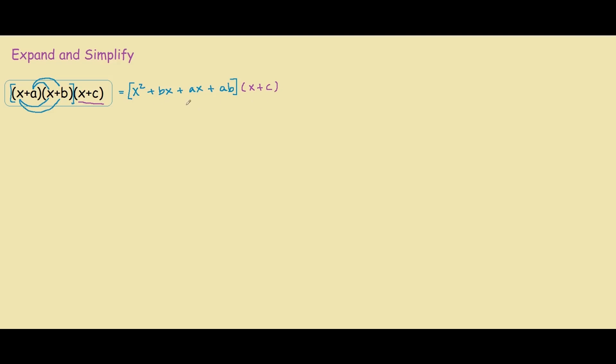So as you can see, it gets a bit more complicated now, but we still use the same steps. So if we expand this out, we have x squared times x is x cubed, x squared times c is c times x squared.